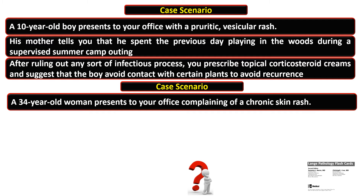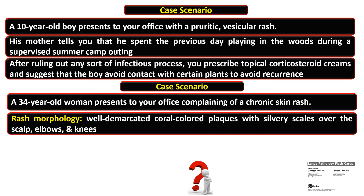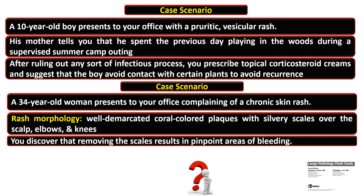In the second case, a 34-year-old woman presents complaining of a chronic skin rash. The rash is well-demarcated, coral-colored plaque with silvery scale over the scalp, elbow, and knee. You discover that removing the scale results in pinpoint areas of bleeding.